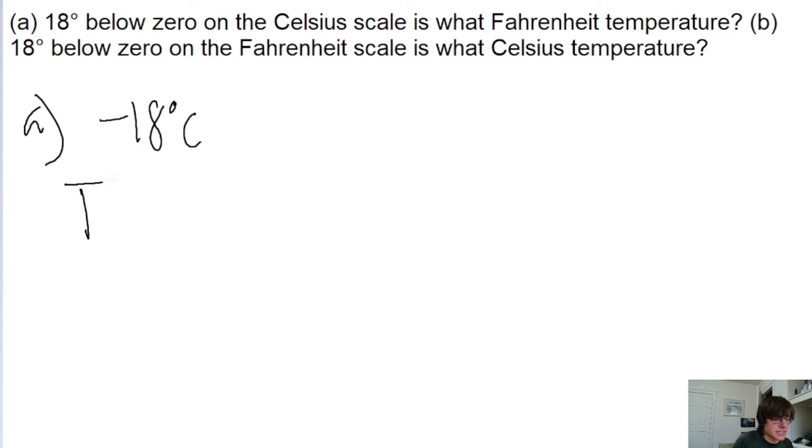Now the formula here is that a temperature in degrees Fahrenheit is equal to 9 fifths times the temperature in degrees Celsius plus 32.